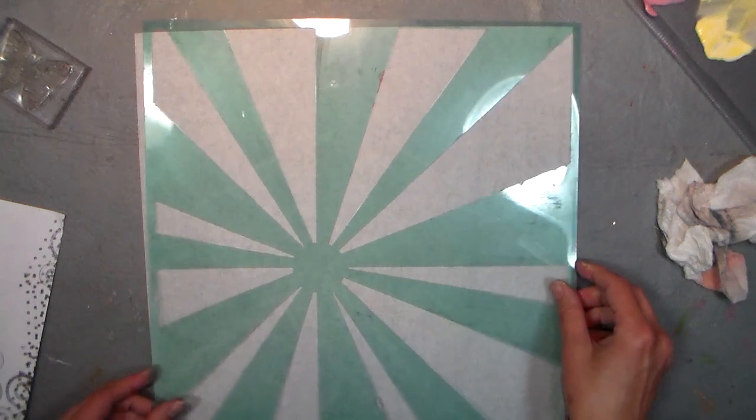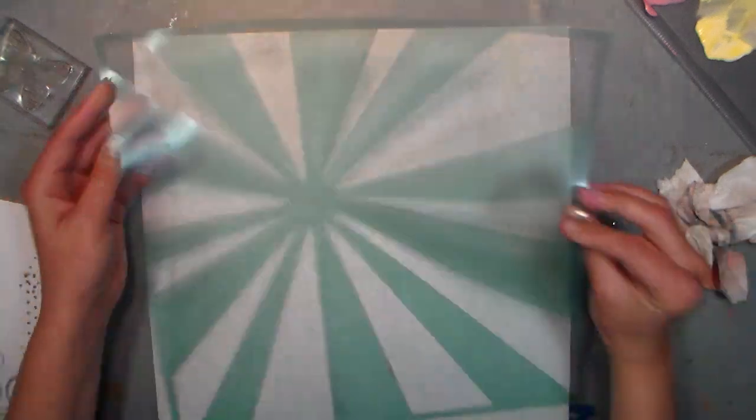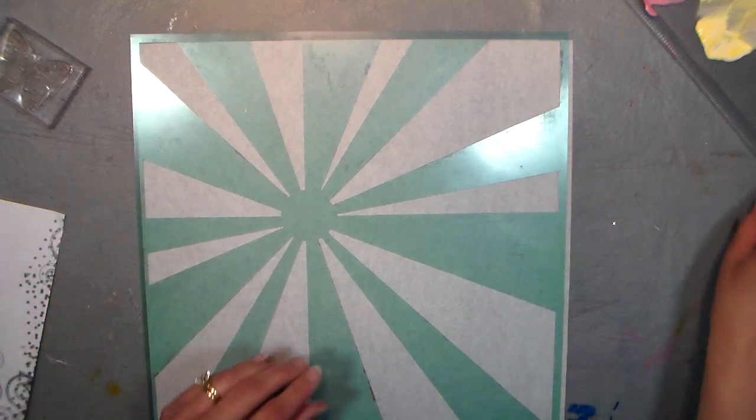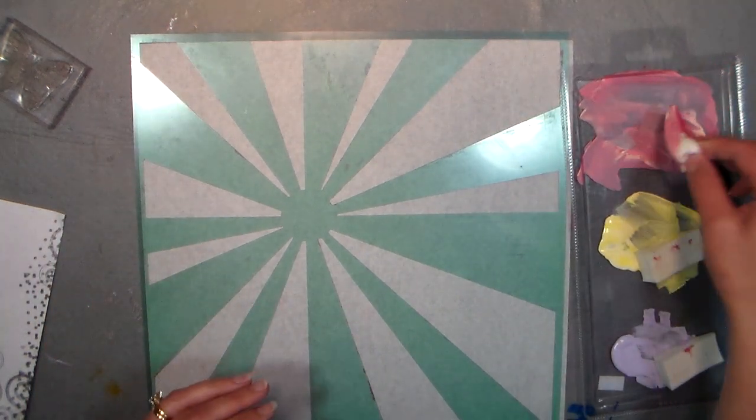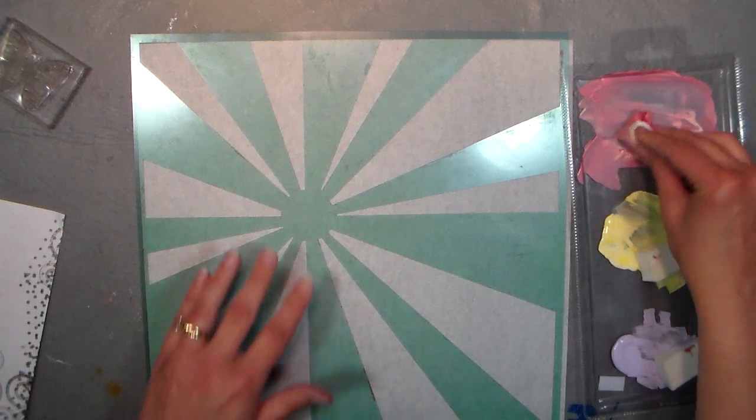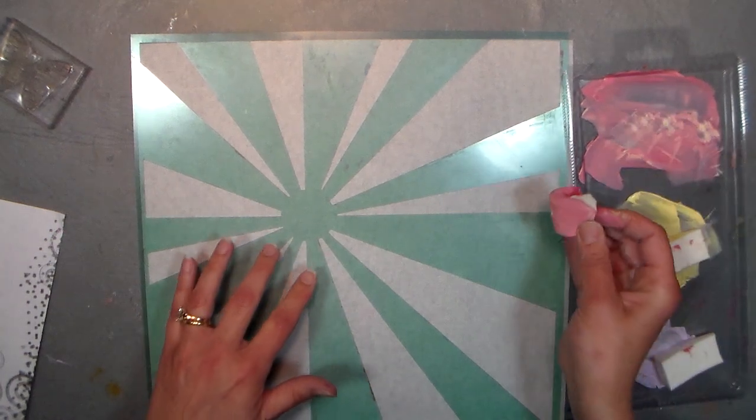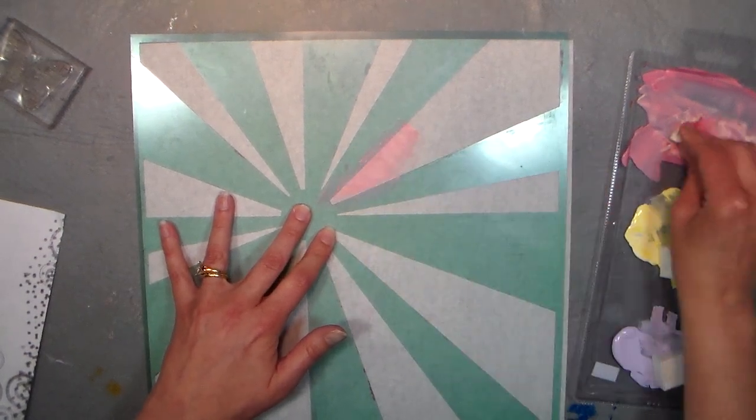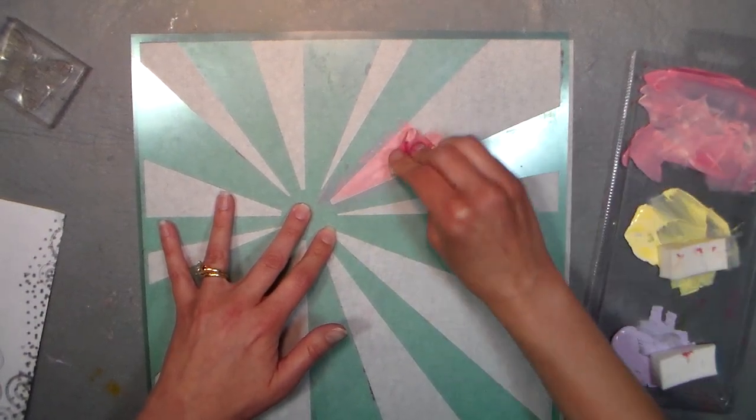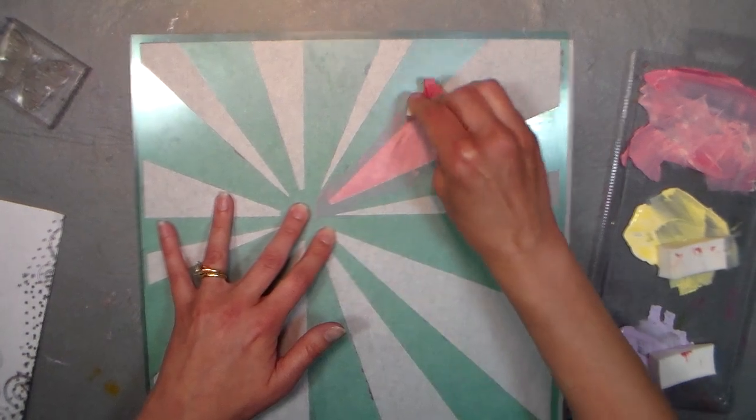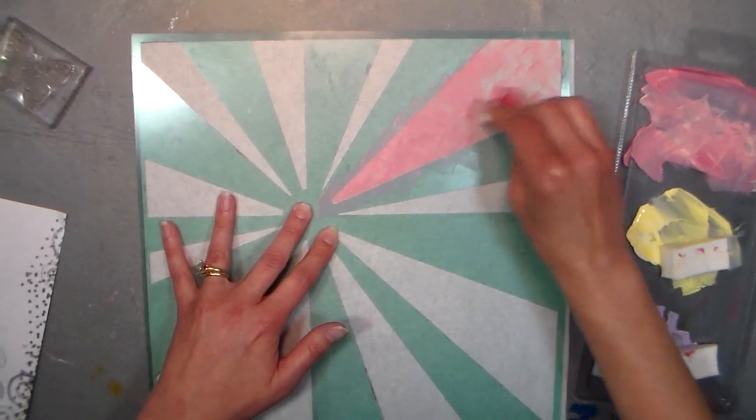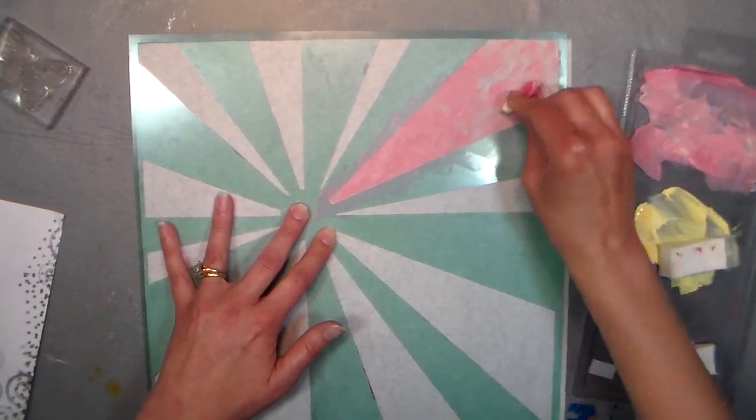First thing I'm gonna do is just kind of flip it. I want to make sure that I've got my starburst where I want it, and then I'm using makeup sponges and acrylic paint to do a little stenciling. I'm just kind of pinching the makeup sponge in half, and I'm just using craft acrylic paint, nothing fancy, and I'm just gonna sponge in some color. My color's starting to dry out.